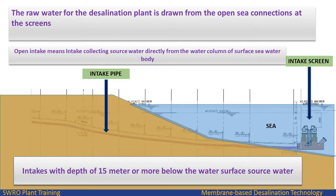The raw water for the desalination plant is drawn from the open sea connections at the screens. Open intake means an intake collecting source water directly from the water column of a surface seawater body, at a depth of 15 meters or more below the water surface.